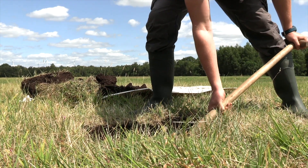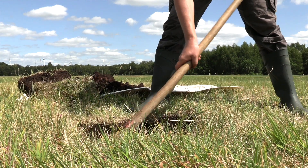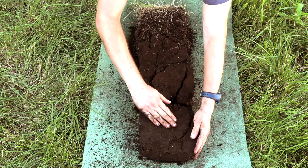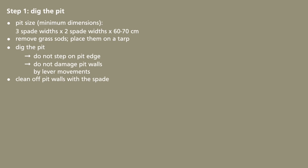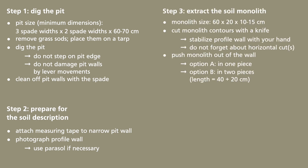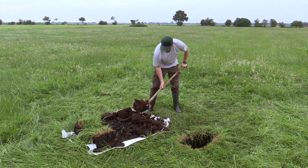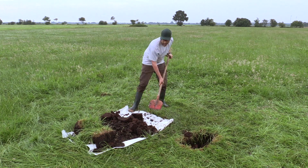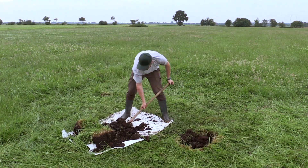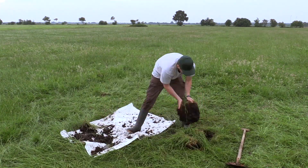Now we know how to dig a shallow pit and how to remove a monolith from the soil profile. In the next video, we will show you how the extracted monolith needs to be prepared for the identification of soil horizons. To sum up, here are all the steps at a glance. After the survey is complete, don't forget to return the peat to the pit. Return the soil respecting its original stratification. Compact from time to time and at the end, put the grass sods back in place.